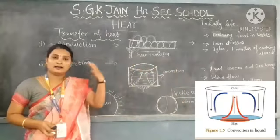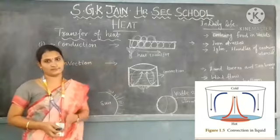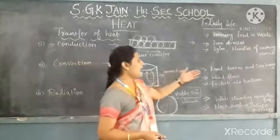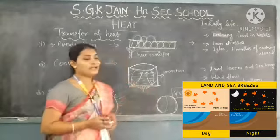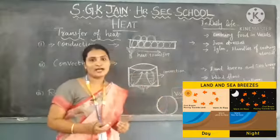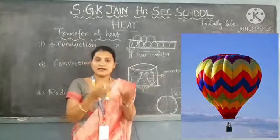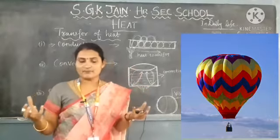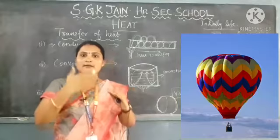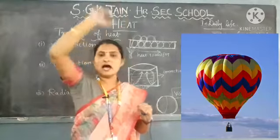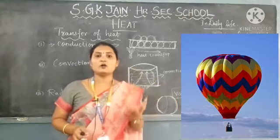Daily applications of convection include the formation of land breeze and sea breeze, and wind flowing from one place to another. In a hot air balloon, hot air is stuffed inside the balloon. Since hot air has lesser density than cold air, the hot air moves upward, causing the balloon to rise gradually. So because of the convection of hot air, the balloon rises.